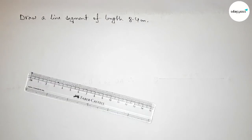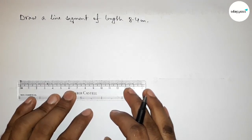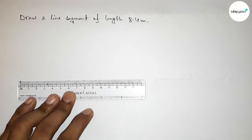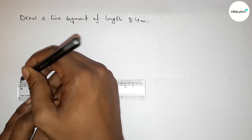Let's start the video. First of all, with the help of a scale, we have to put the scale perfectly here and we have to measure the length 8.4 centimeter. So first, this is the starting zero.